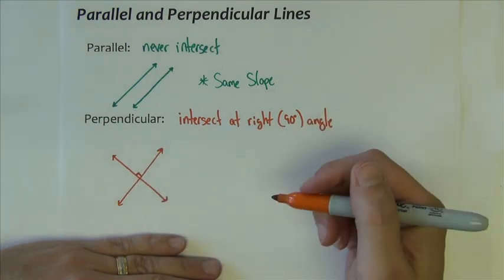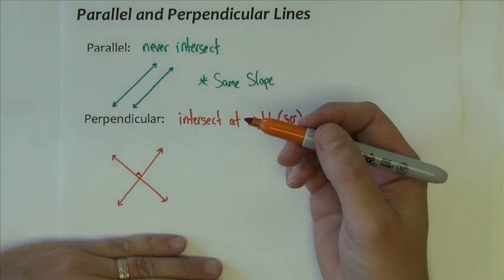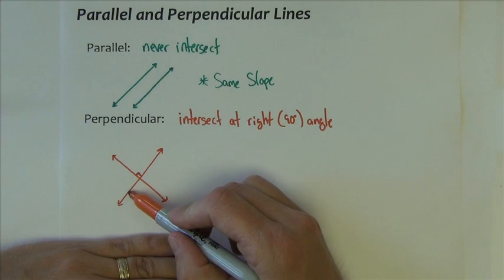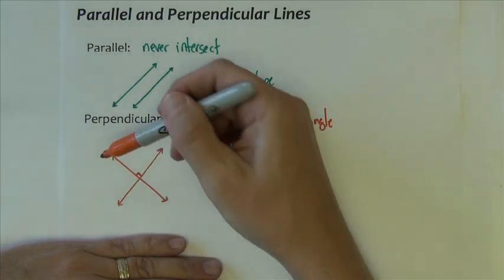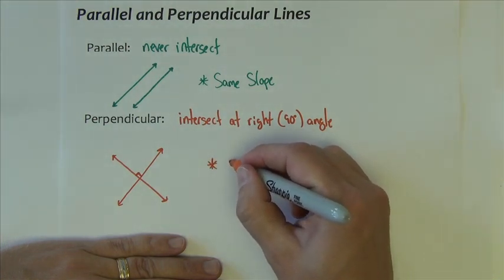They make a right angle, right there. Obviously their slopes are different. Clearly they're different because one has a positive slope, it goes up from left to right. The other has a negative slope, it's coming down from left to right. So what can we say about the slope?